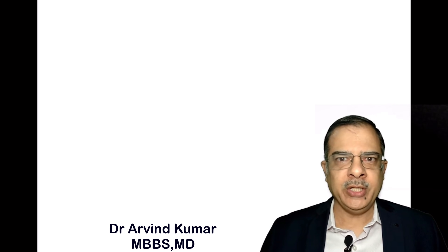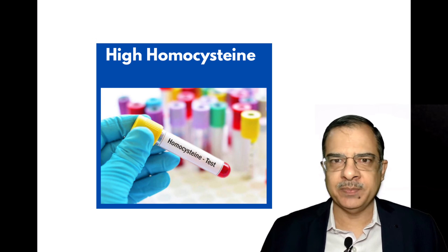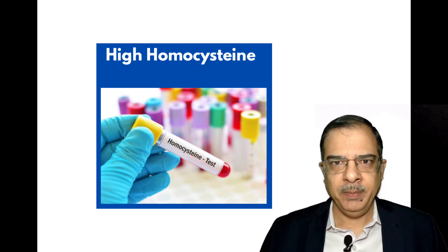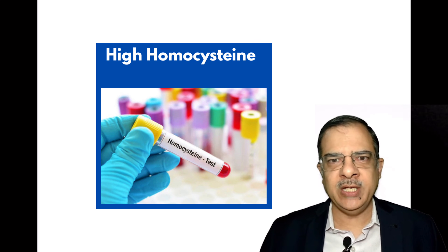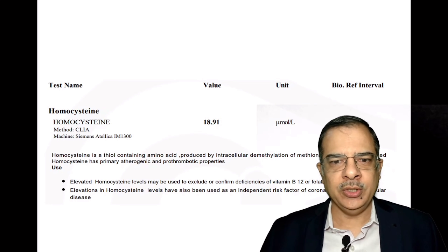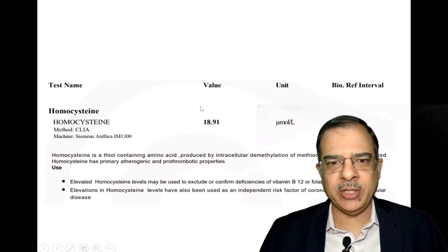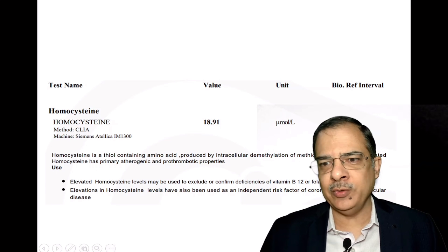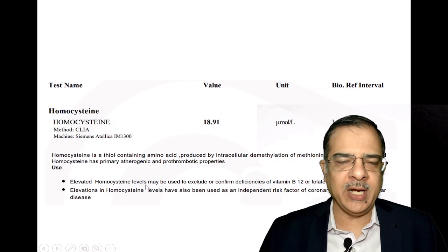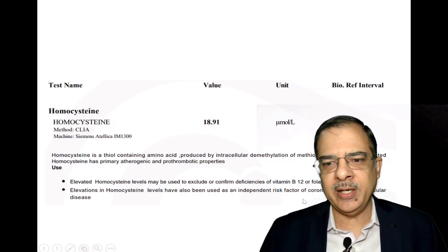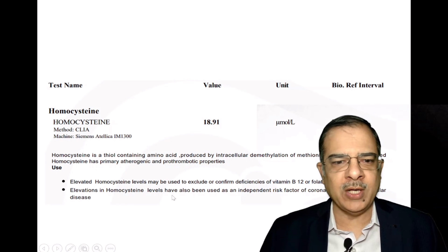Hello everyone. When a patient gets a routine health checkup done, there is a test known as homocysteine levels. When the homocysteine levels are high, the patient gets confused — is it a risk for heart disease? Some doctors say ignore it, some say this is a risk of heart attack. This is a classical example: a patient gets a master health checkup done, and the homocysteine levels are high at 18.91, while the normal range is 3.7 to 13.9. When the patient reads the interpretation, it says this is an independent risk marker of coronary or cerebrovascular disease.